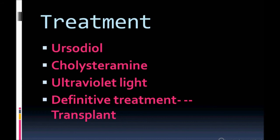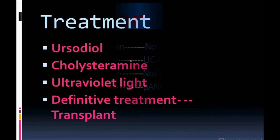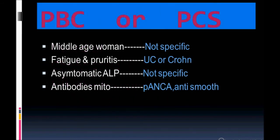Another thing to look for is ursodiol, which can lower the progression of the disease — a very important point that can be asked on your exam. Ursodiol lowers the progression rate of PBC. Note: I made a mistake earlier using 'PCS' — it should be PSC, primary sclerosing cholangitis. I apologize for that.